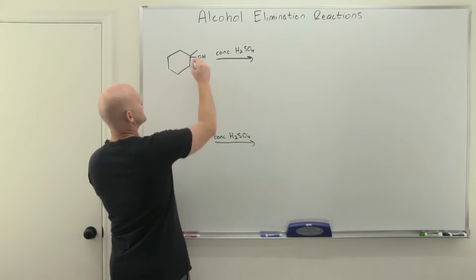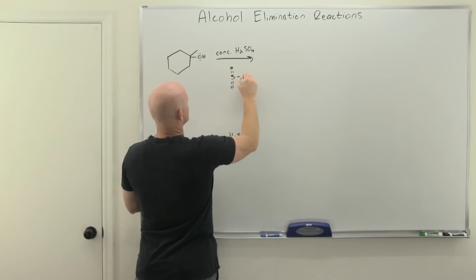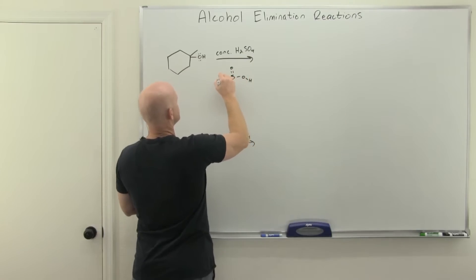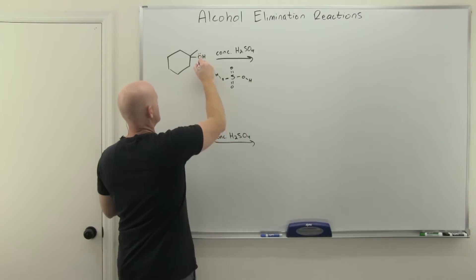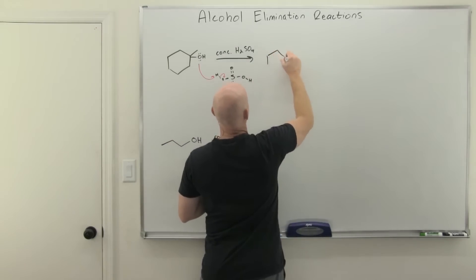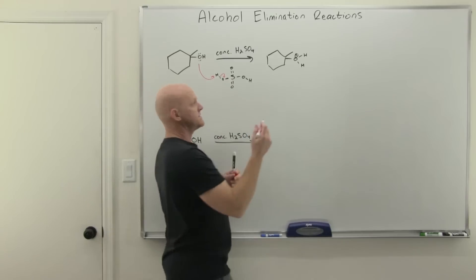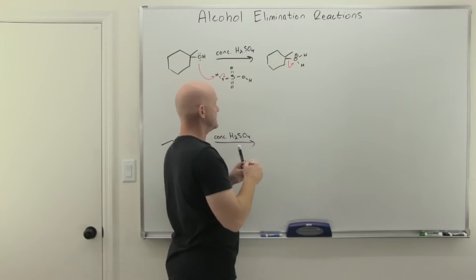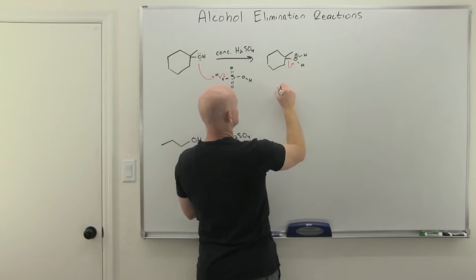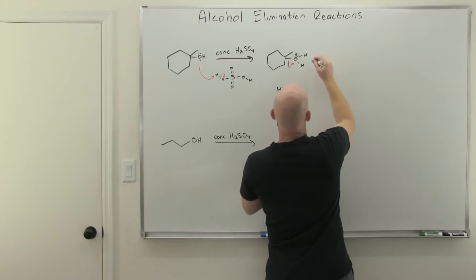Let's see how this reaction works. We are going to turn our alcohol, which has a poor leaving group — an OH — into a good leaving group. Once you've got a good leaving group, go ahead and have it leave. That's going to take us to forming a carbocation, and I've also formed some HSO4⁻ in the process.